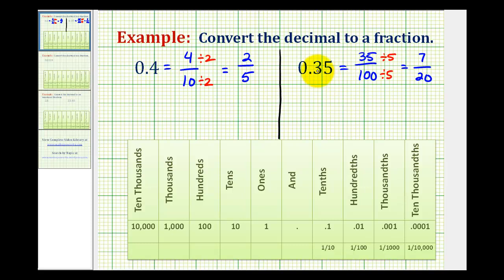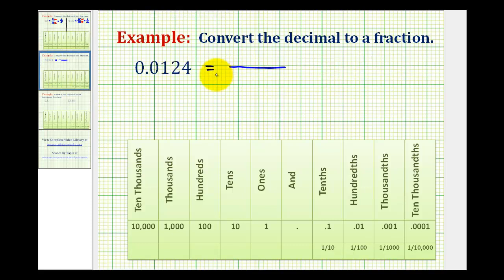So let's go ahead and take a look at one more example. Using the shortcut, we would put 124 in the numerator. And then we'd have 1 followed by 1, 2, 3, 4 zeros because there are 4 digits to the right of the decimal point.